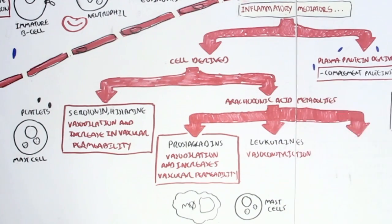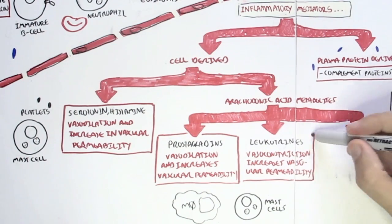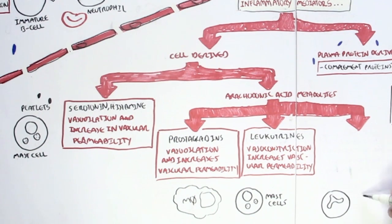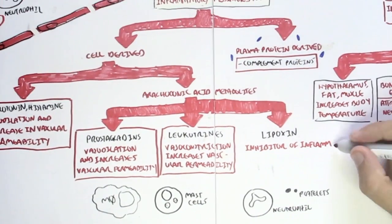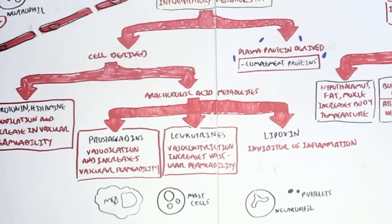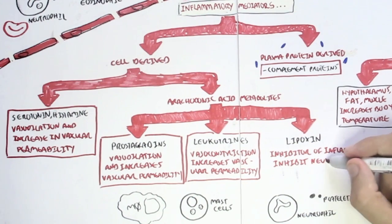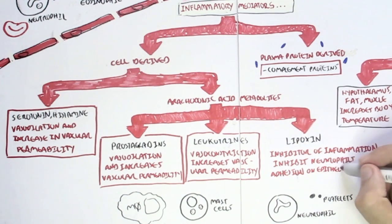We also have leukotrienes, which cause vasoconstriction but increase vascular permeability. And then we have lipoxins, which are secreted by neutrophils through the activation of platelets. And lipoxins actually are inhibitors of inflammation. Important thing to know. And they also inhibit neutrophil adhesion on epithelial cells and also chemotaxis, which basically inhibits inflammation.